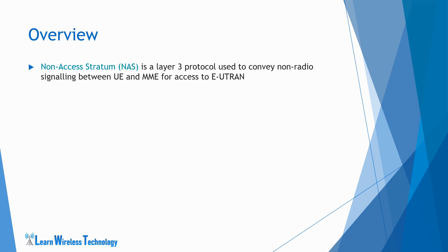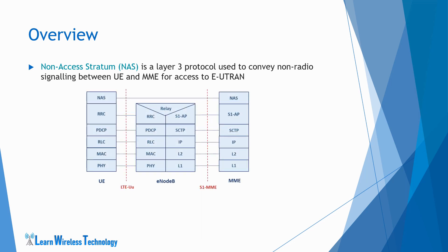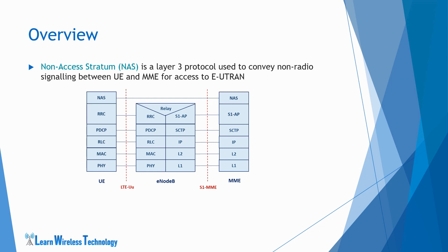Non-radio signaling means the signaling information transferred between UE and network without transmitting them directly over the radio interface. These signaling messages originate from the NAS layer and are encapsulated into the RRC messages that are transferred between UE and eNodeB, which are transmitted over the radio air interface. As seen in this figure, this is the LTE control plane protocol stack diagram. The NAS layer of UE communicates with the NAS layer of MME. There is no direct air interface connection between UE and MME, so the communication happens via eNodeB. The NAS signaling messages originating at the UE side are encapsulated in the RRC message generated at the RRC layer and transmitted to eNodeB over the air interface in the uplink direction. The eNodeB does not interpret or decode the received NAS messages and transfers them directly to MME via S1AP protocol.